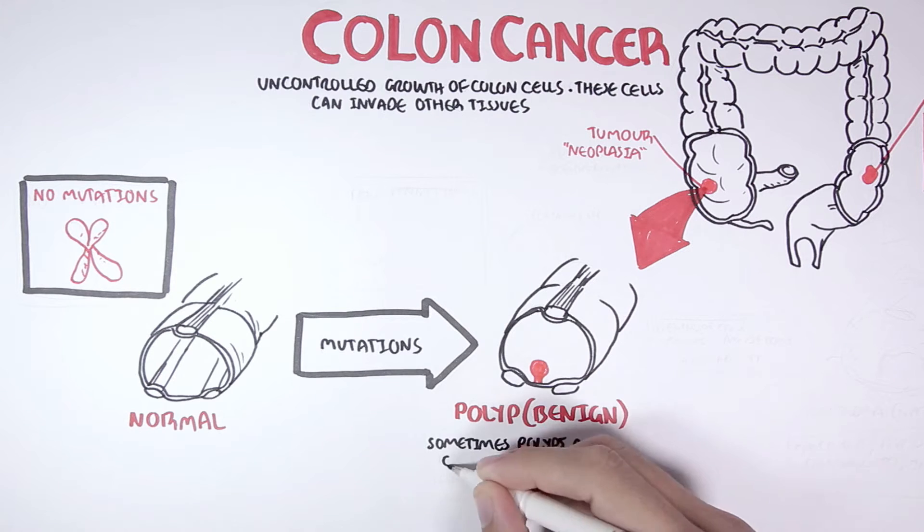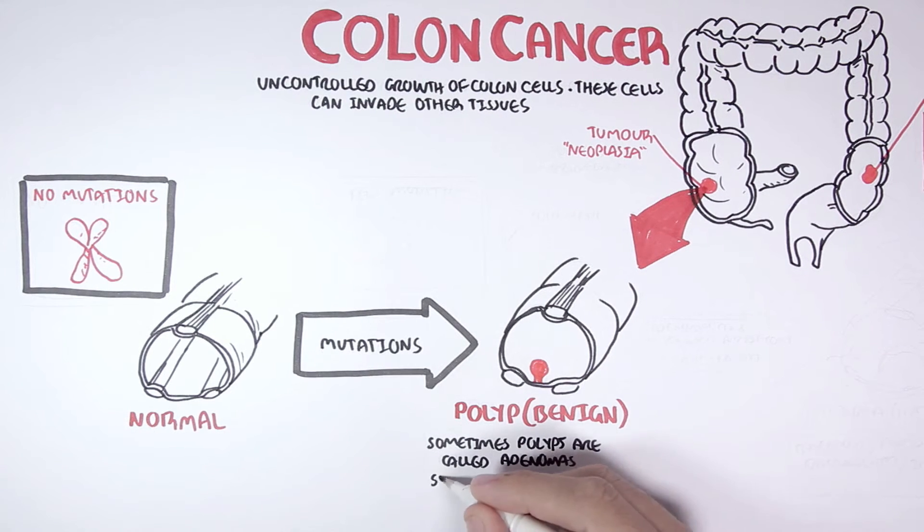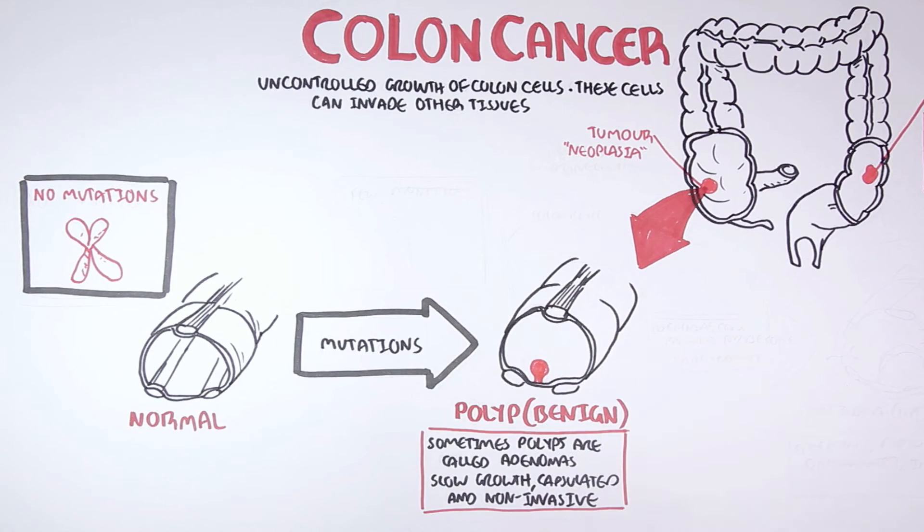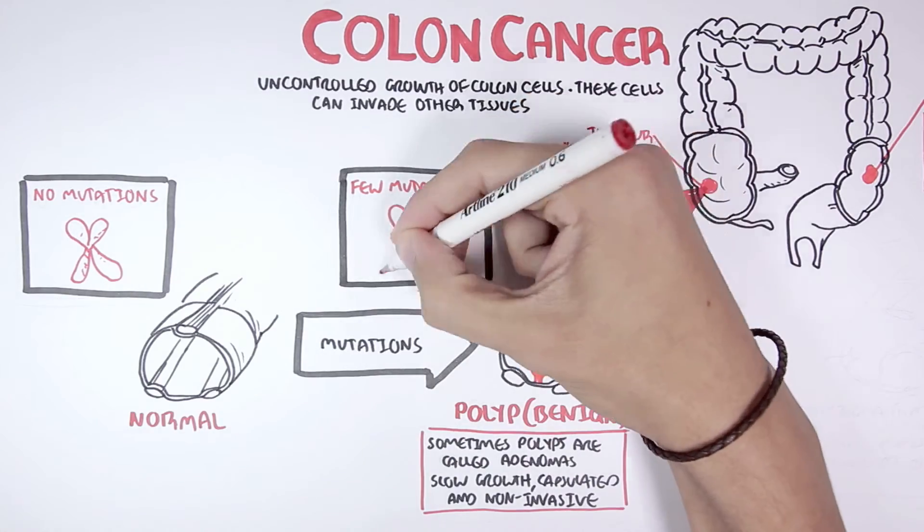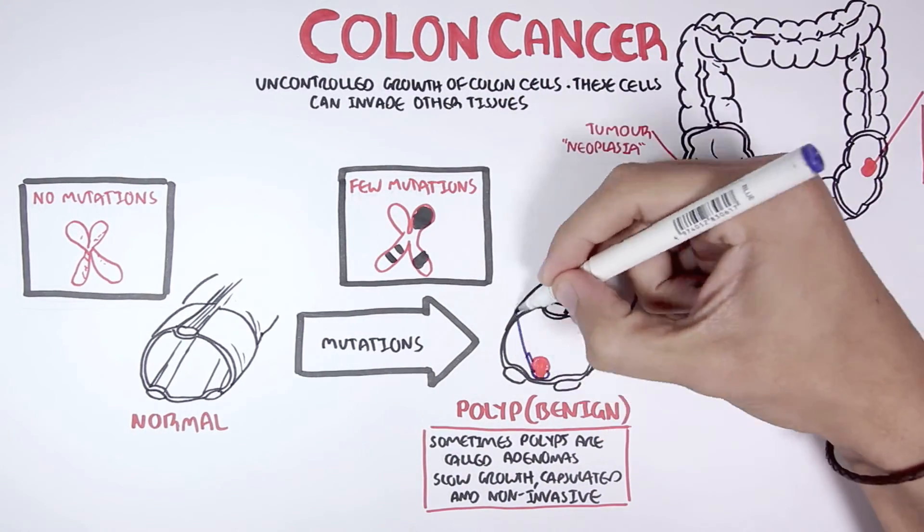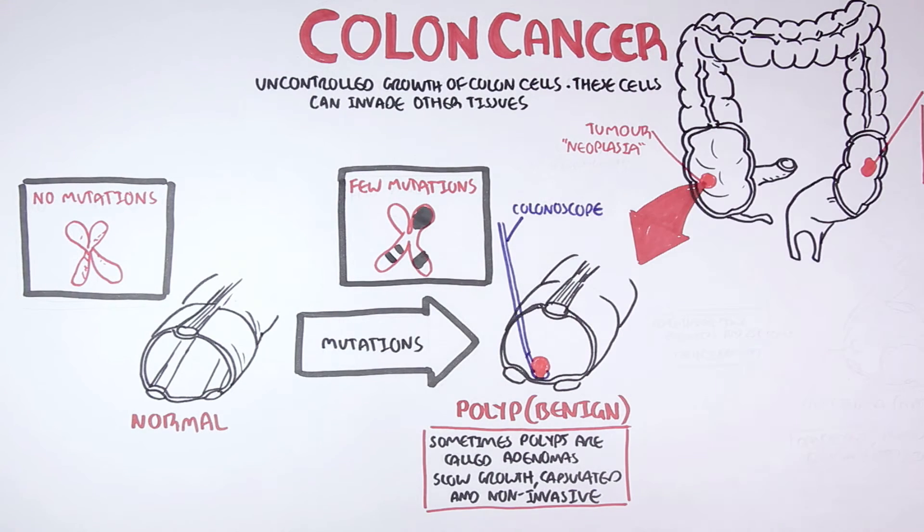Sometimes polyps are called adenomas if they are big enough. Polyps are slow-growing, capsulated and non-invasive. A polyp develops because of possible mutations in the DNA that give rise to them. Usually, people undergo surgery called colonoscopy to remove these polyps in case they are or can become cancerous.